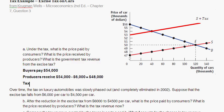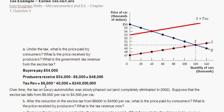Lastly, what is the government tax revenue from the excise tax? Tax revenue equals the per-car excise tax times the number of cars sold in the market. The per-car excise tax is $6,000, and the equilibrium quantity is 40,000 cars. So $6,000 times 40,000 cars equals $240 million in tax revenue. The tax revenue is simply the per-car excise tax times how many cars are bought and sold.